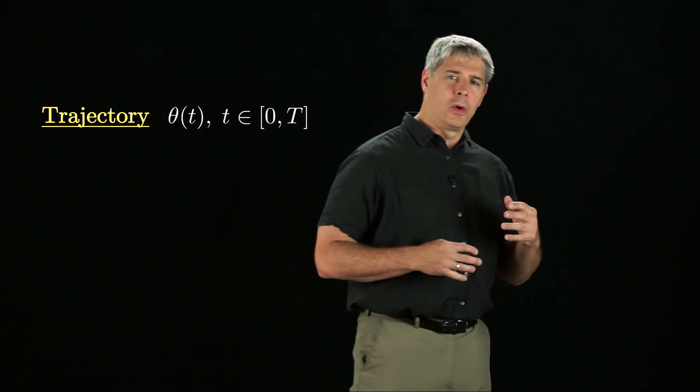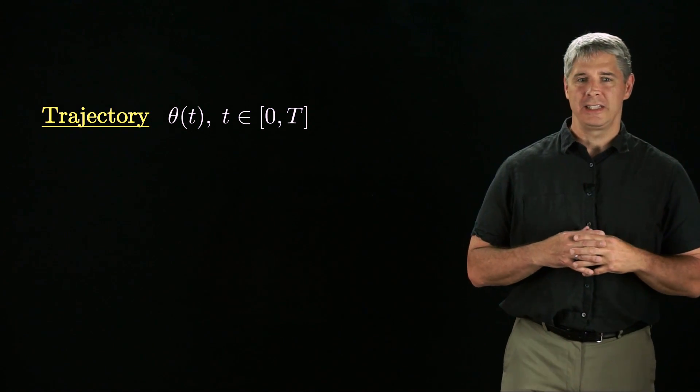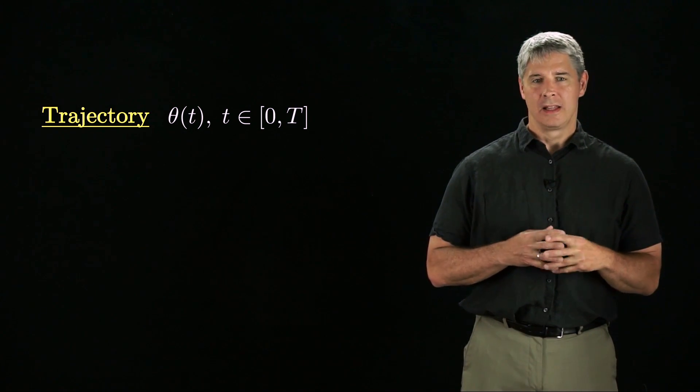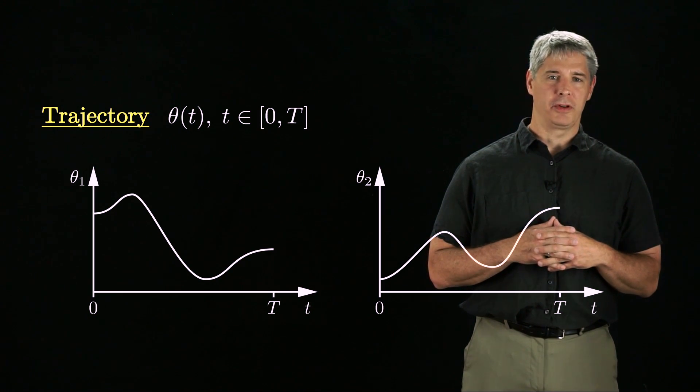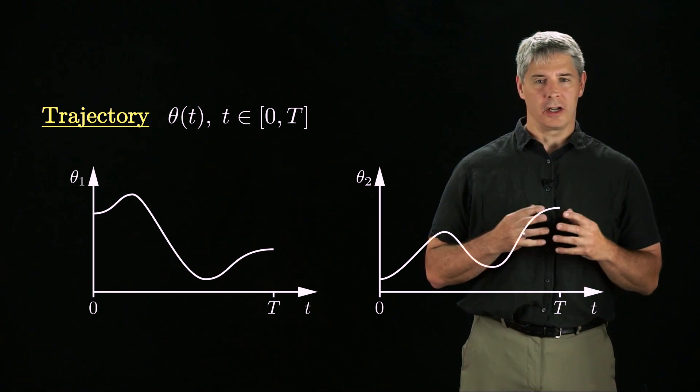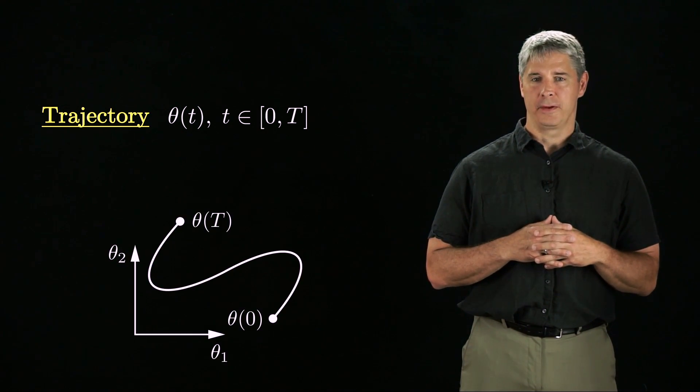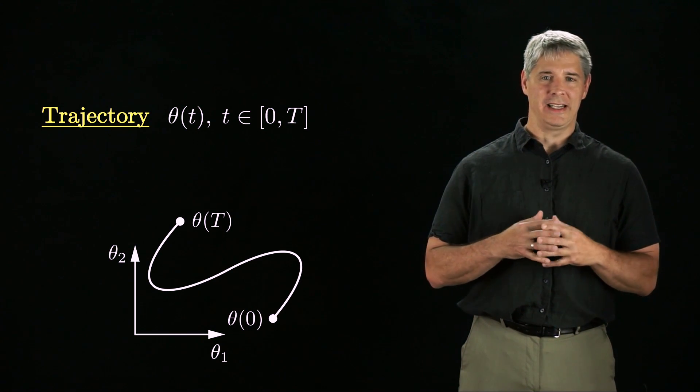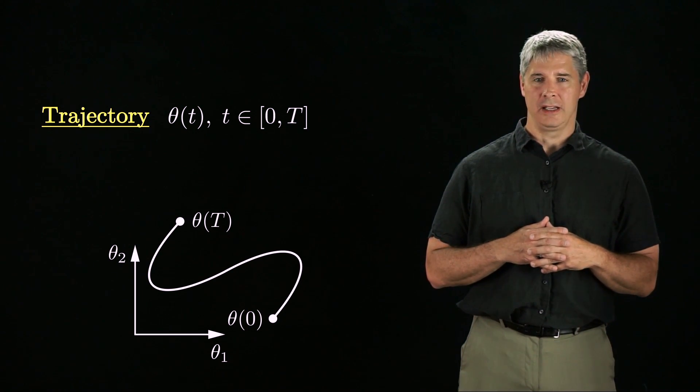A robot configuration as a function of time is called a trajectory. We can write a trajectory as θ(t), where the time t goes from zero to capital T. This figure shows a trajectory for a robot with two degrees of freedom. We could also plot this trajectory directly in the configuration space, also known as the C-space. As the time t increases from zero to capital T, the configuration follows the path shown here.